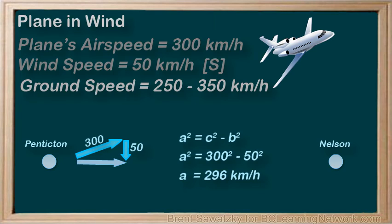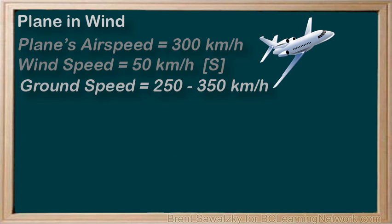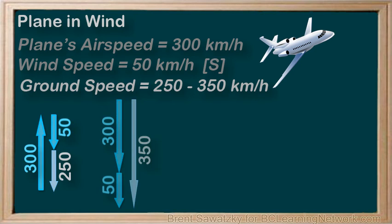If we were heading to a location south of Nelson, our ground speed would be greater than 296, as the wind would aid our overall speed. Heading south of Nelson, our ground speed would be between 296 and our maximum of 350 kilometers per hour, depending on our angle. In this tutorial, we simply explored some scenarios relating to a plane flying in a wind — a typical situation that pilots deal with daily. We can easily determine the minimum and maximum ground speed of the plane based on the plane's airspeed and the wind speed.